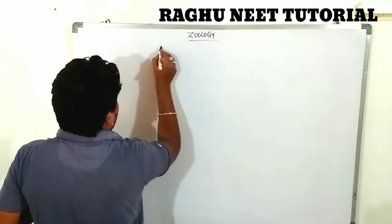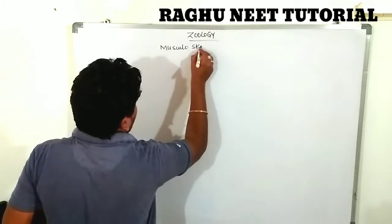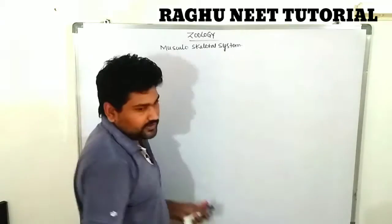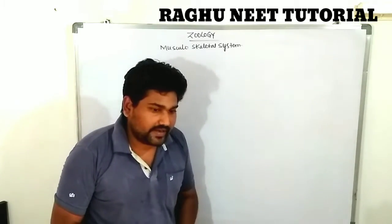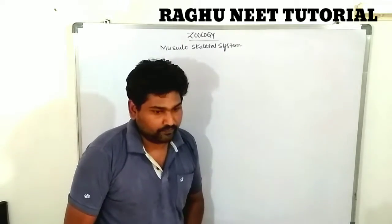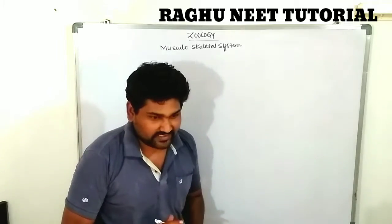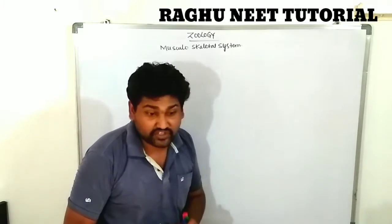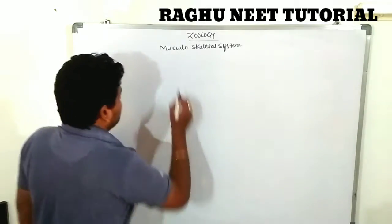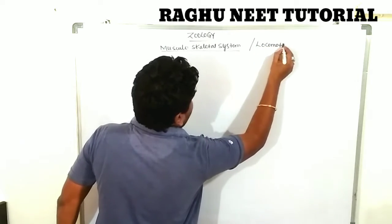We are discussing the new chapter on the musculoskeletal system. The musculoskeletal system is concerned with movement and locomotion. Both muscle and skeleton are useful for giving a particular structure to the body and are essential for locomotion. The musculoskeletal system is known as the system of locomotion and movement.